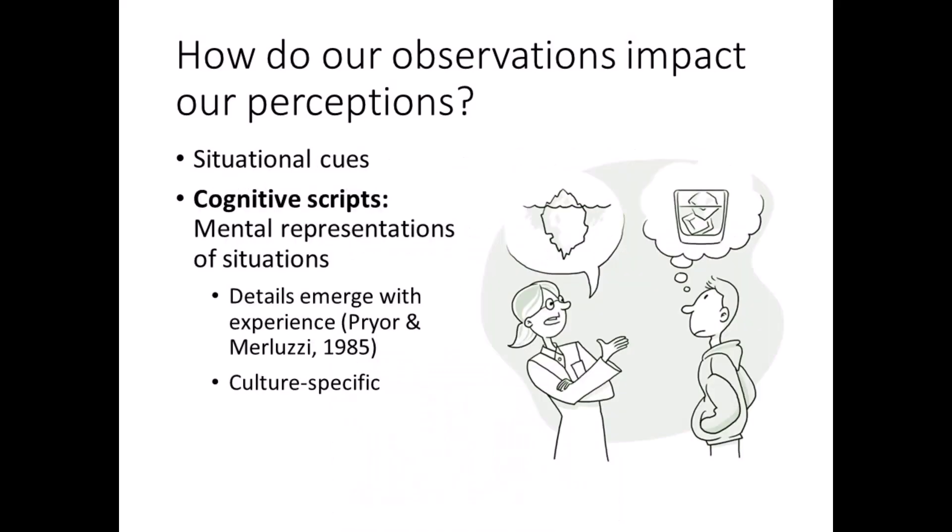The third piece of raw data we pay attention to is situational cues. We each have scripts, or preconceived notions about certain situations, that help us to anticipate goals, behaviors, and probable outcomes. Consider what it means to eat at a restaurant. For many of us, we drive there, park, enter, wait to be seated, sit, order, drink, eat, pay, exit, and drive home.